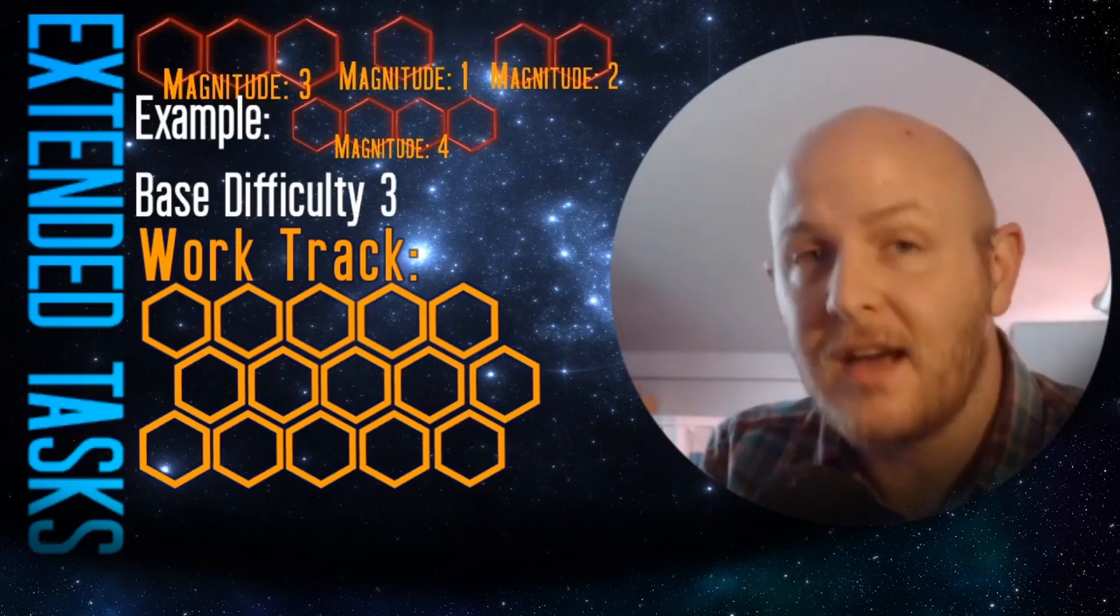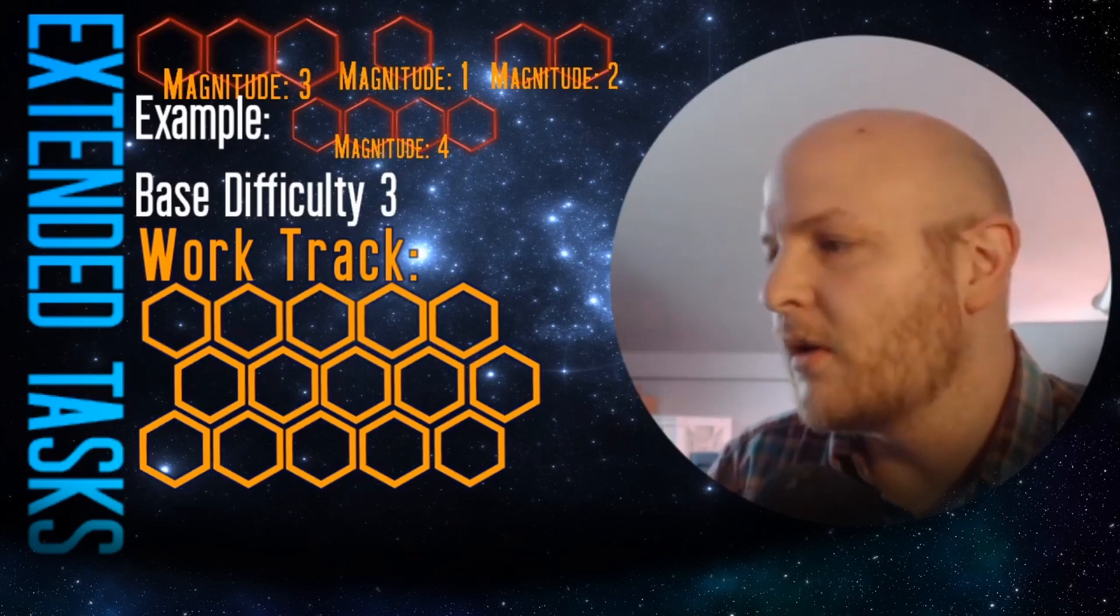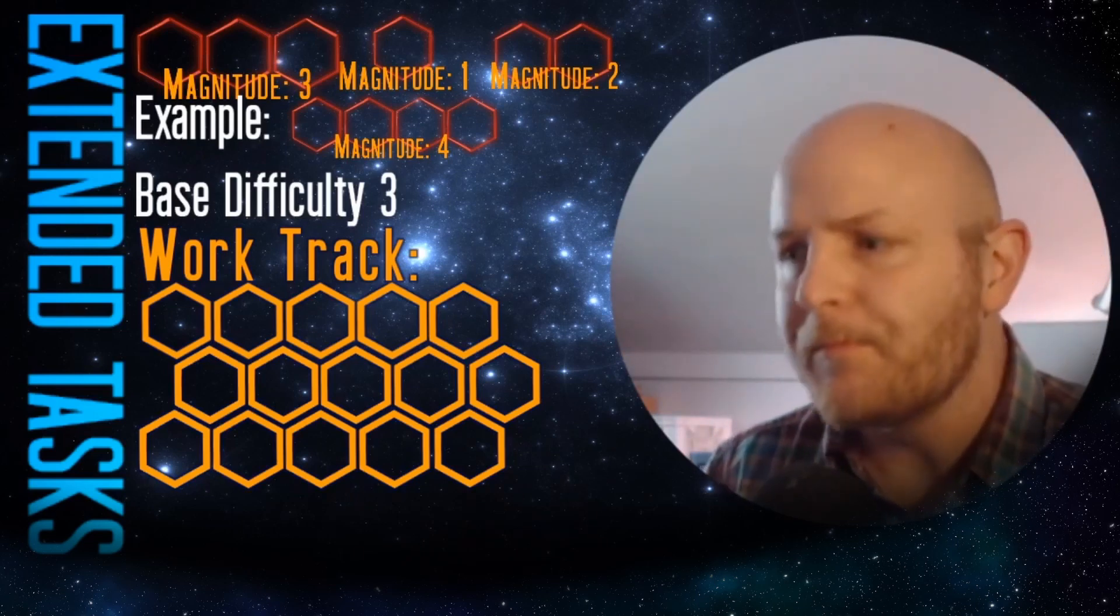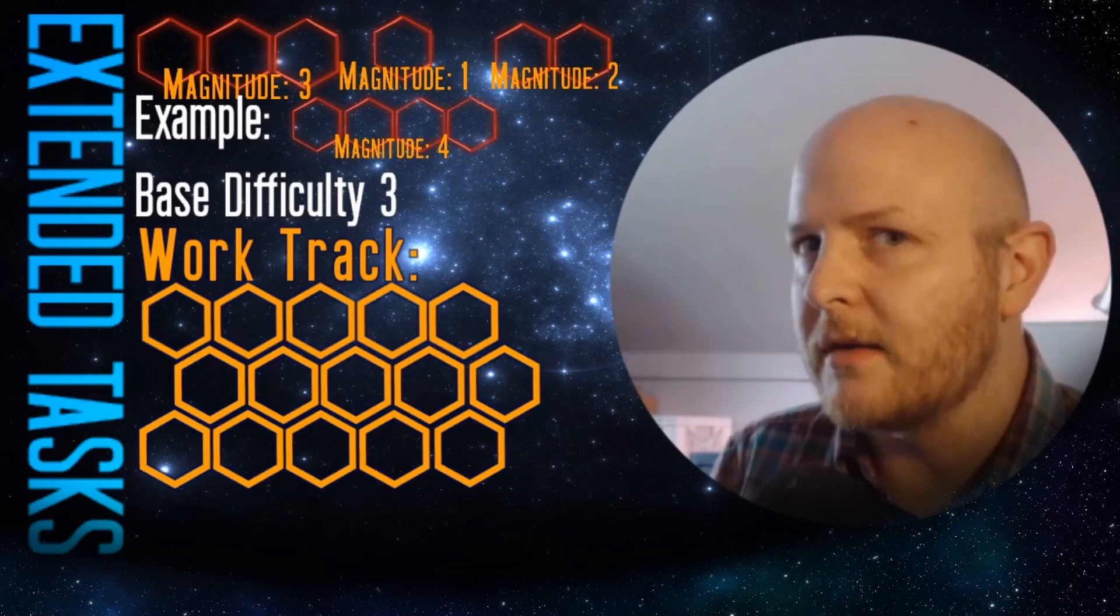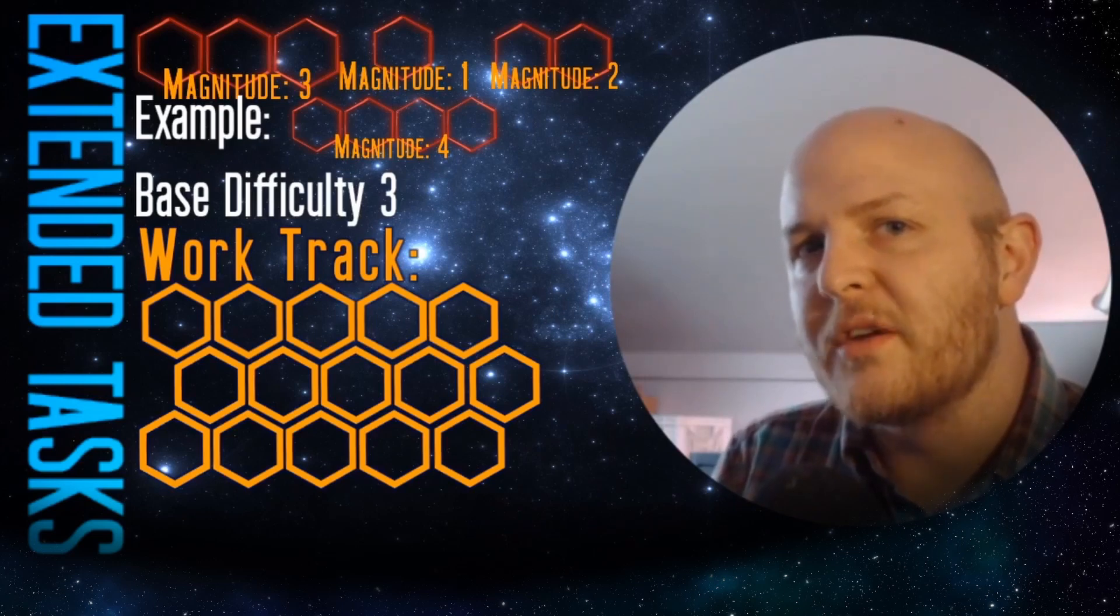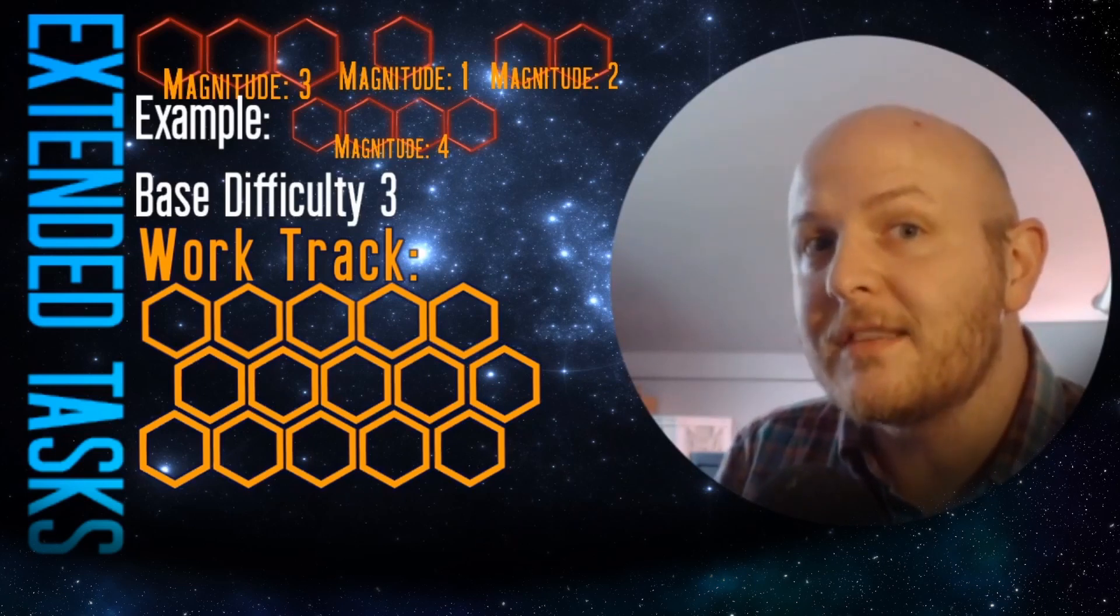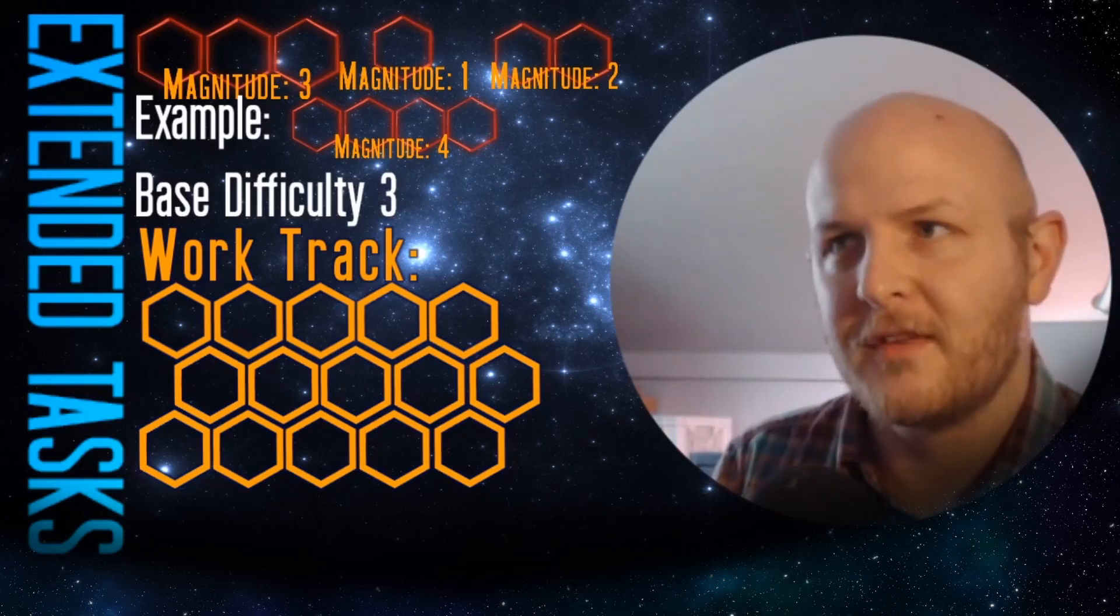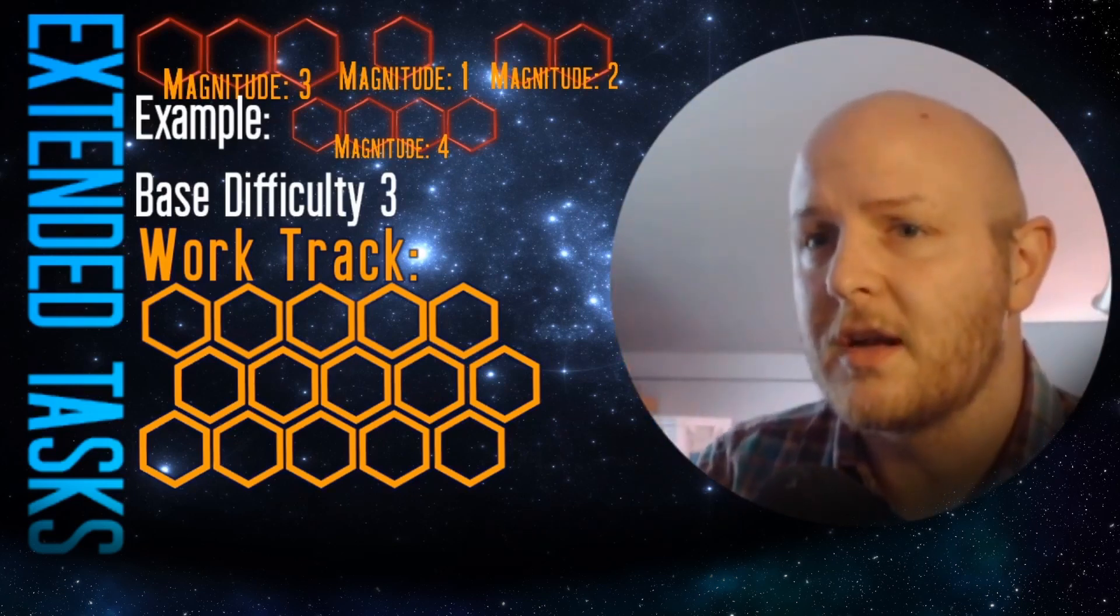I don't think that magnitude four, base difficulty four, work track 15 extended task is easy at all. It is something which the chief engineer with a discipline score of five can absolutely accomplish. They can do it, they can confidently do it. This is the difference between Star Trek Adventures and a D&D style game where you throw the dice and heck if I know. Failure is not a big component of the Star Trek genre. Peril and drama are, and that doesn't mean that the characters are always going to succeed. But what it does mean is that the characters aren't going to fail because they weren't up to it.